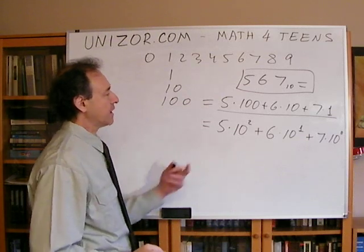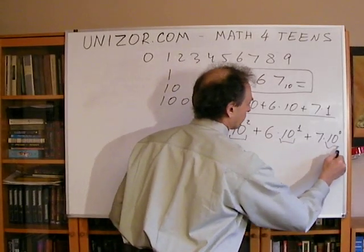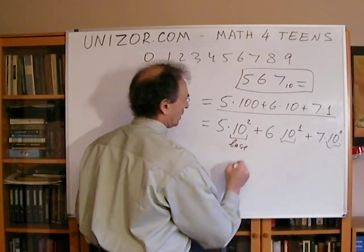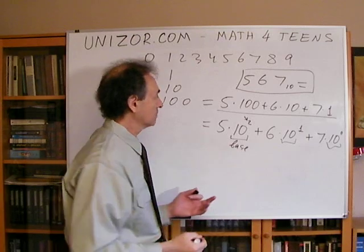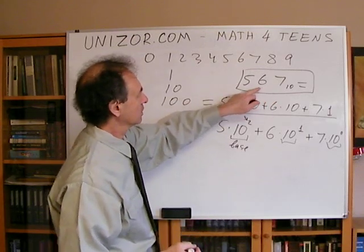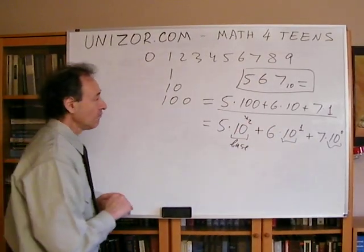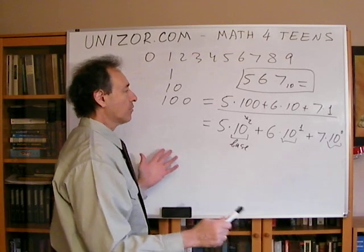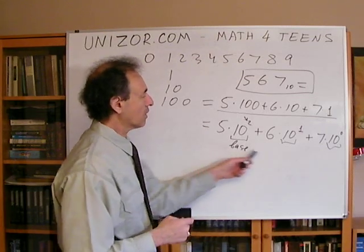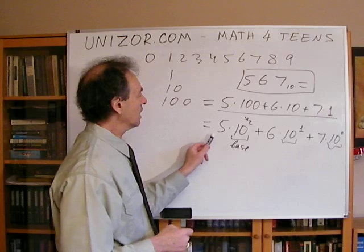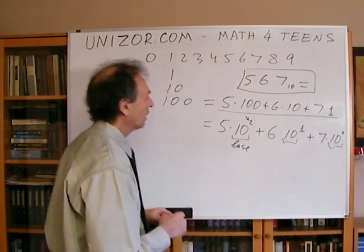I can write it slightly differently: 5 times 10 squared plus 6 times 10 to the 1st degree plus 7 times 10 to the 0th degree. Why is this better? It represents that this is a base, and the power is a position, basically: 0, 1, and 2. In general, any number can be represented in this system using powers of 10 and certain multipliers, each one of them being from these numbers from 0 to 9.